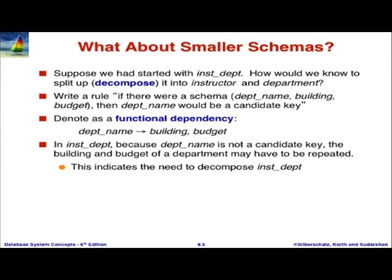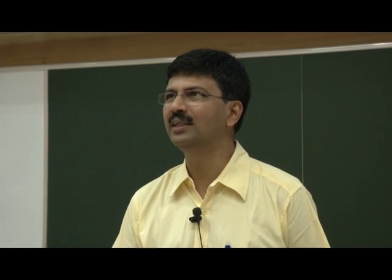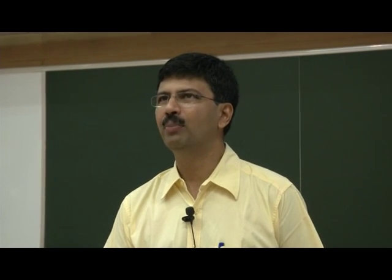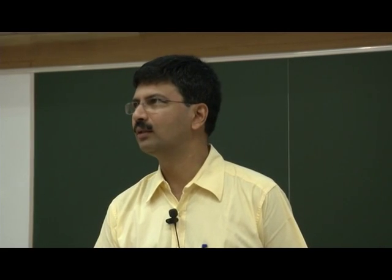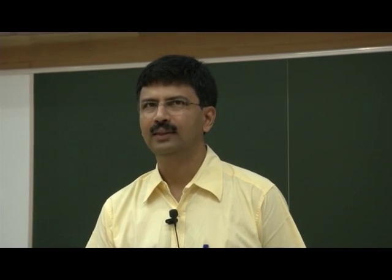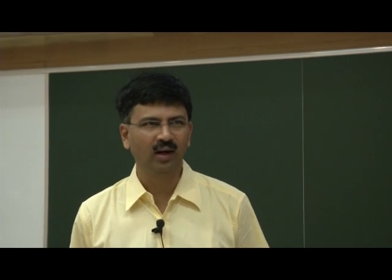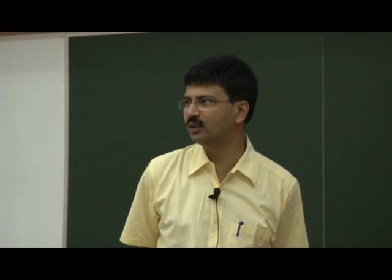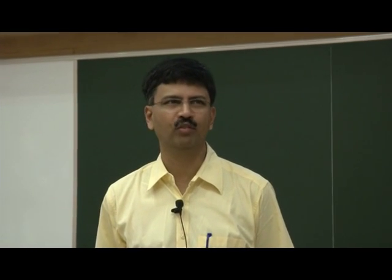It's actually counter-intuitive — what happens is you may land up with extra tuples but less information. More data does not mean more information. Take this example: we have an employee relation with ID, name, street, city, and salary. If we decompose it into employee-1 (ID, name) and employee-2 (name, street, city, salary), what can go wrong? Multiple people may have the same name.